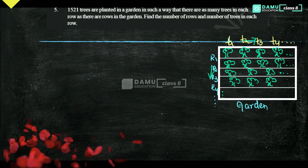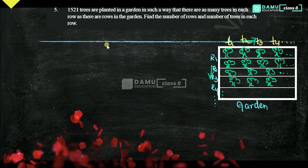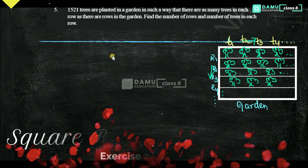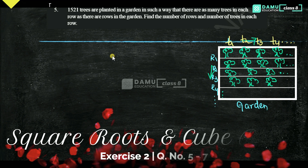Hello viewers, in this module we are going to discuss the 5th question. 1521 trees are planted in a garden such that there are as many trees in each row as there are rows in the garden. Find the number of rows and number of trees in each row.